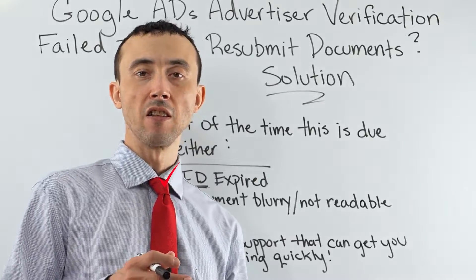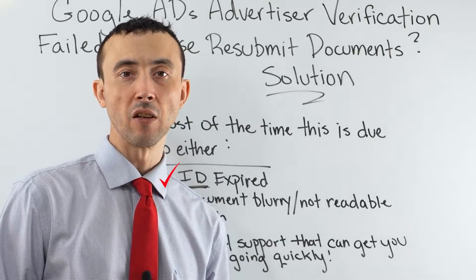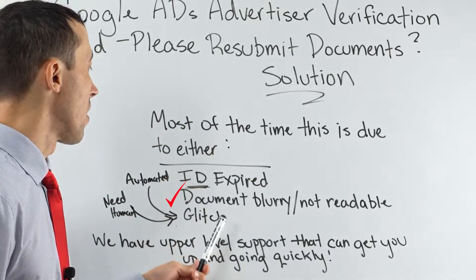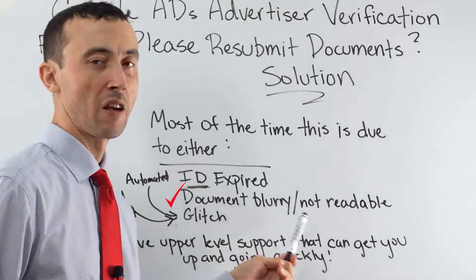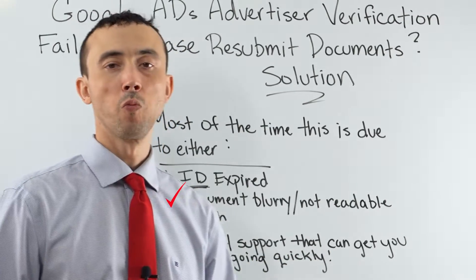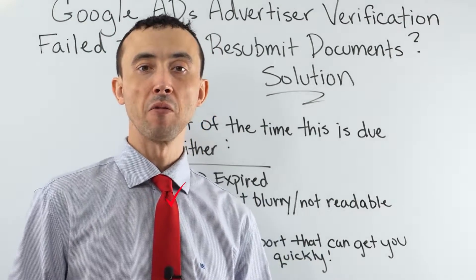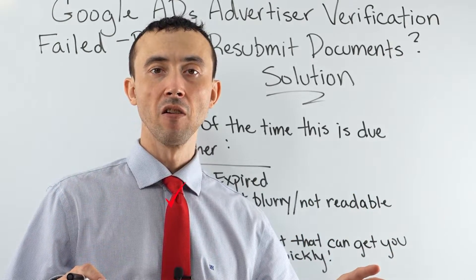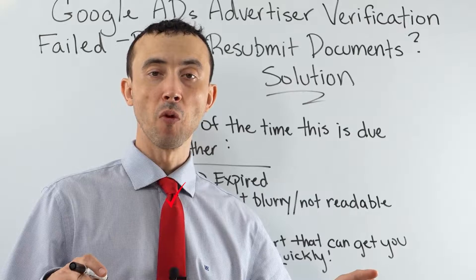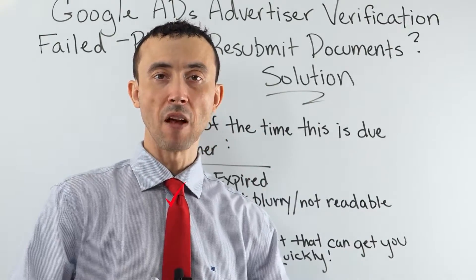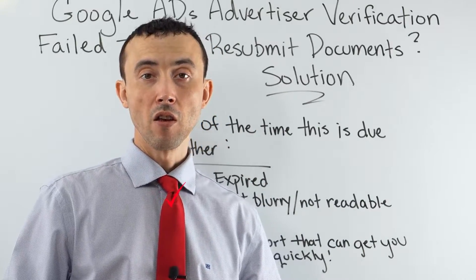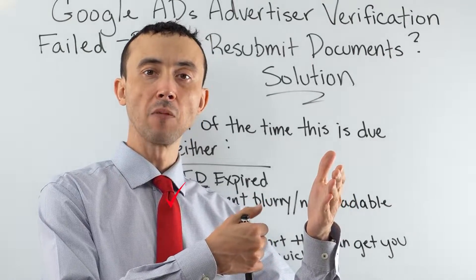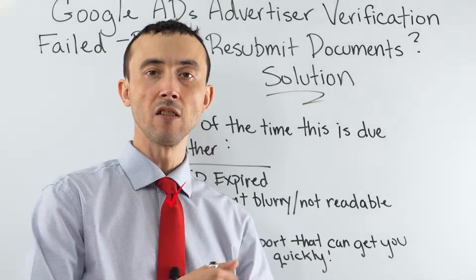You also need a government-issued document. You can't submit a school ID or anything like that. Second reason is your document is blurry or not readable. This is a bigger factor than you probably realize. If you're going to submit a document, it needs to be done on a flatbed scanner for a full-size document, or it can be done on an iPhone taking a picture of your passport or driver's license.